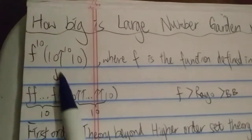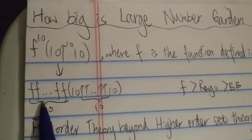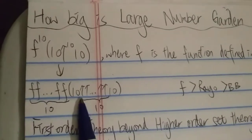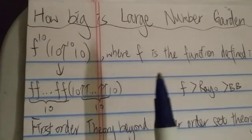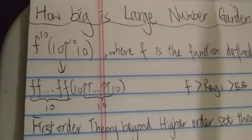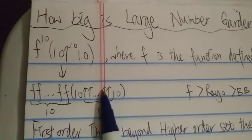So this was pretty straightforward. It just means 10 f's of 10 with 10 up arrows 10. So you repeat f 10 times, and this is the input itself.